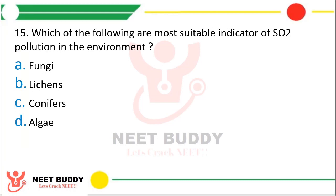Question 15: Which of the following are most suitable indicators of SO2 pollution in the environment? Fungi, lichens, conifers, or algae. The correct answer is Option B — lichens.